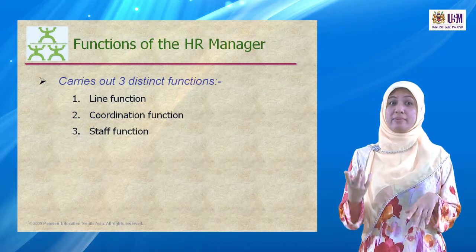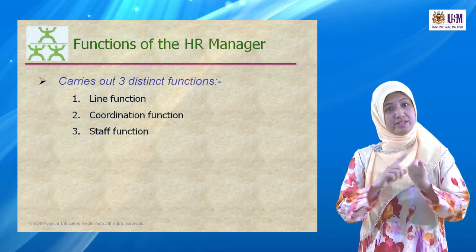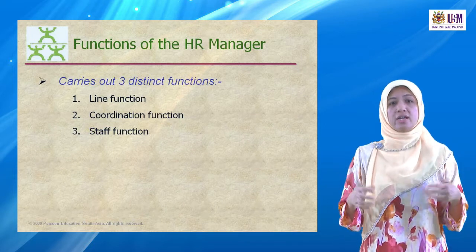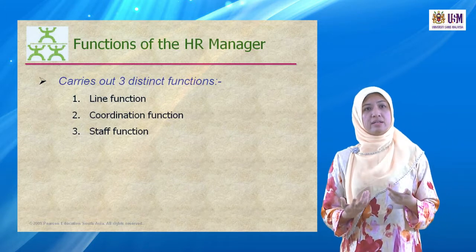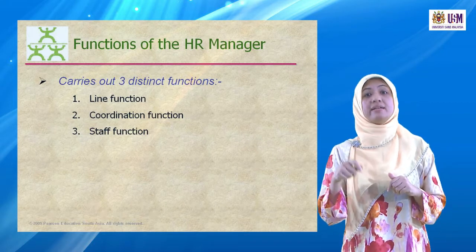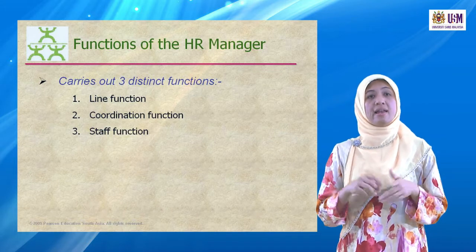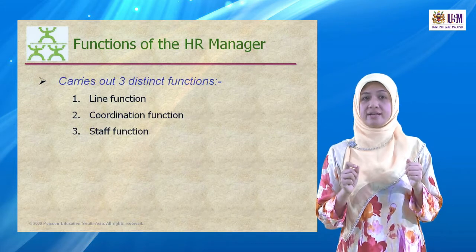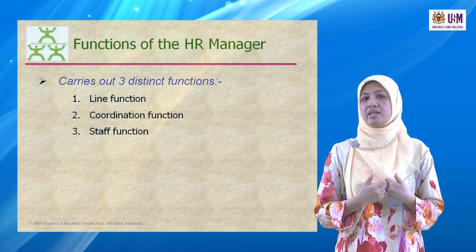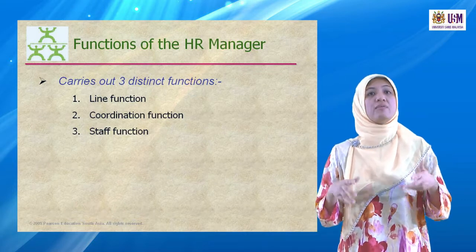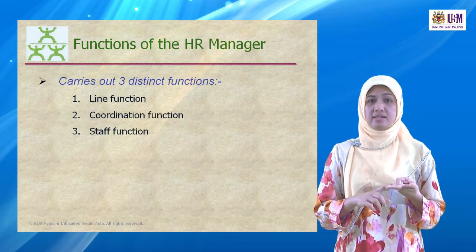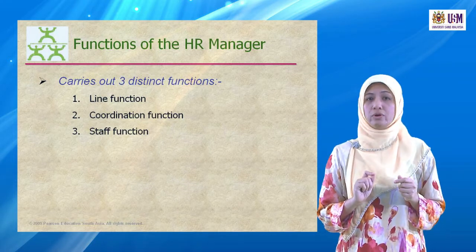HR managers also have three functions: line function, staff function, and coordination function. When the HR manager does a line function, they direct the activities of people in their own department and related service areas. For example, if you are the HR manager with 20 people under you, you must do the planning, leading, controlling, and organizing of your own staff.